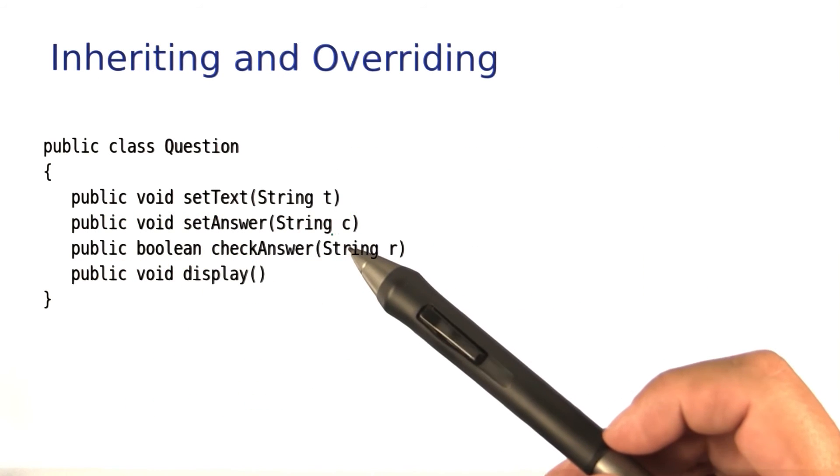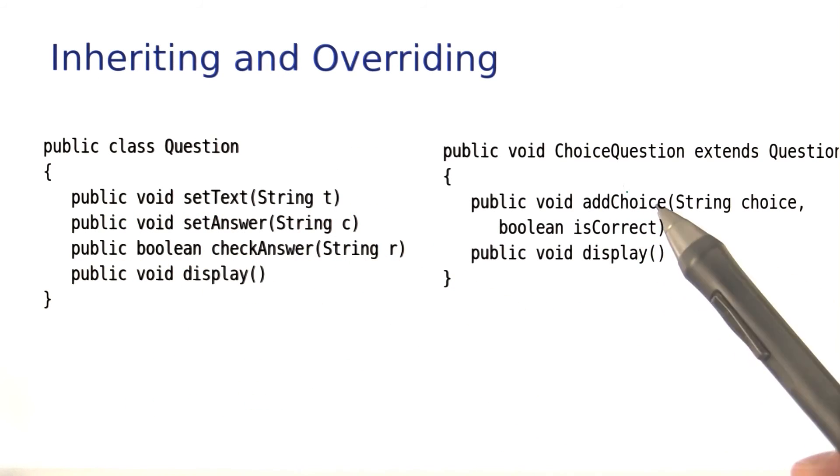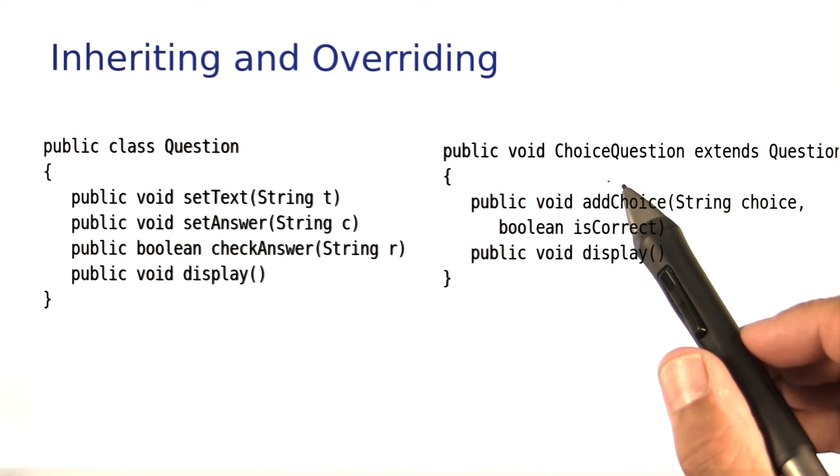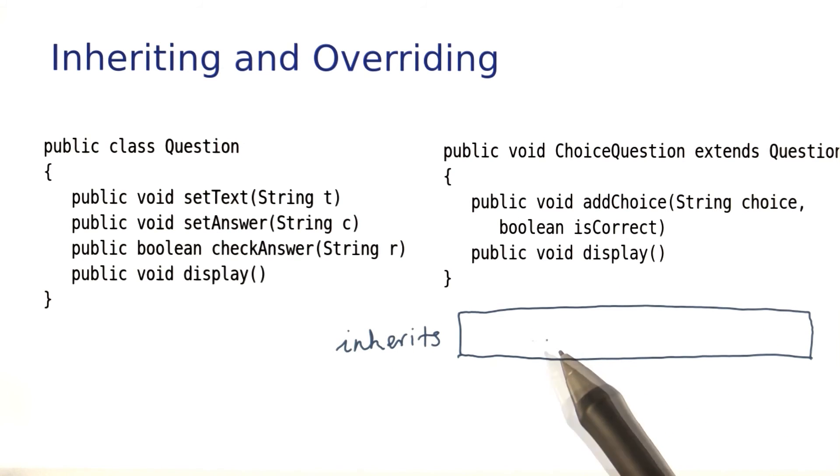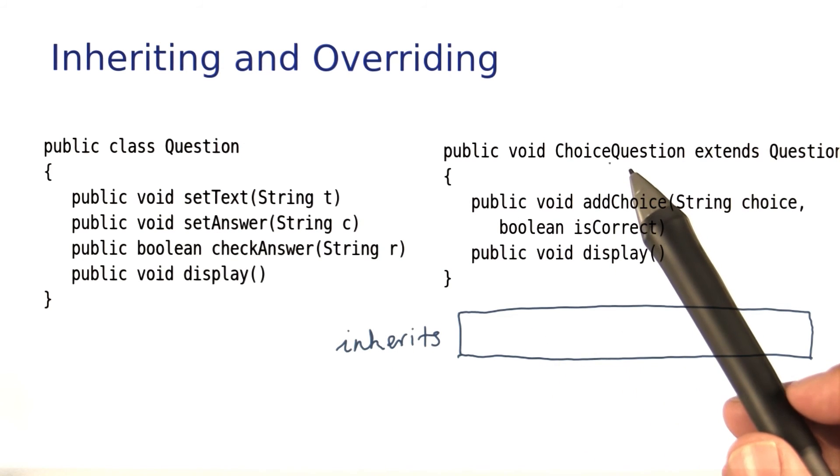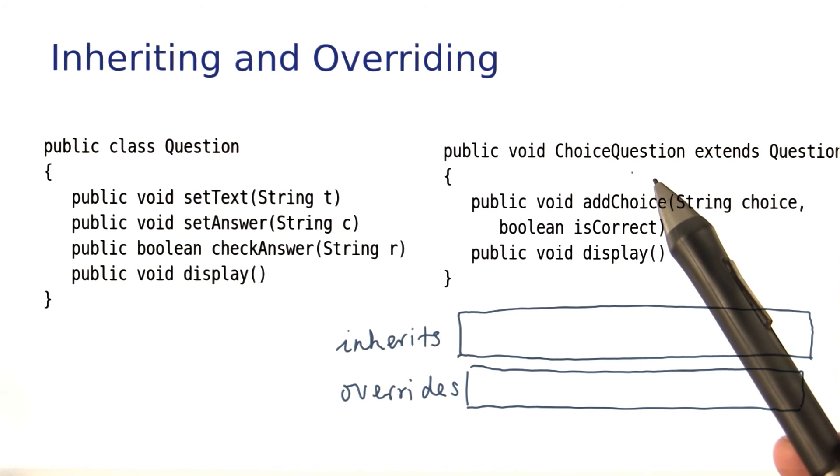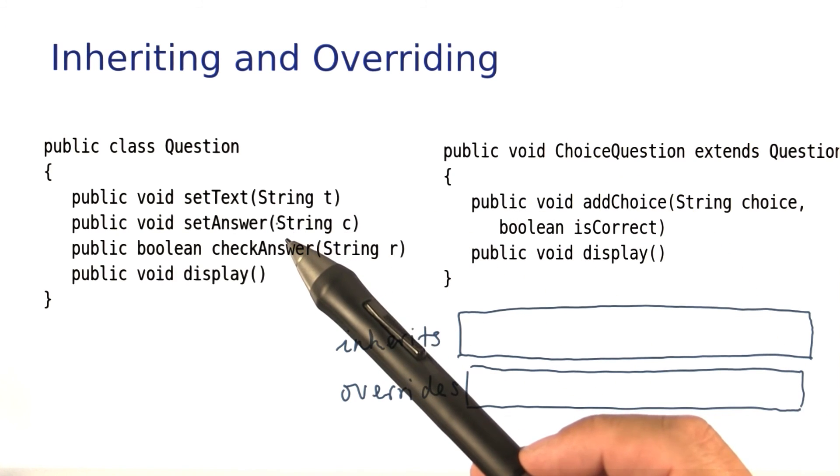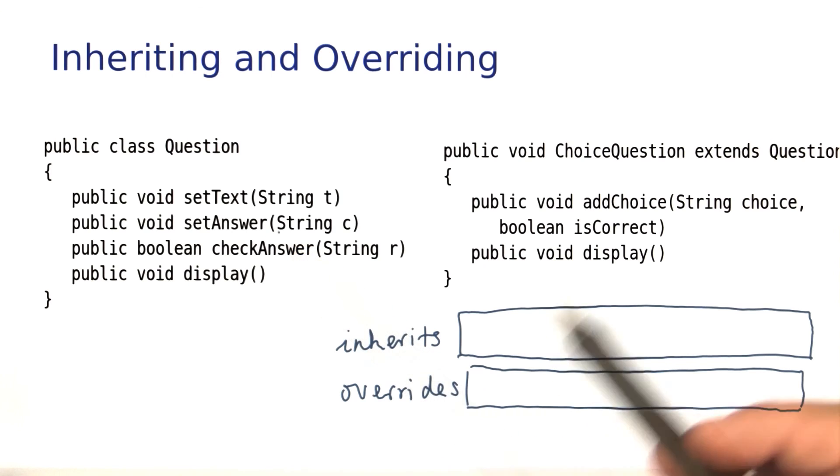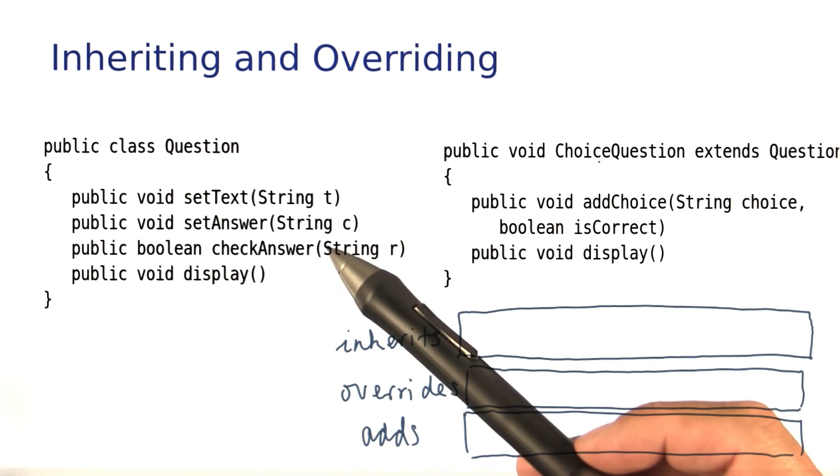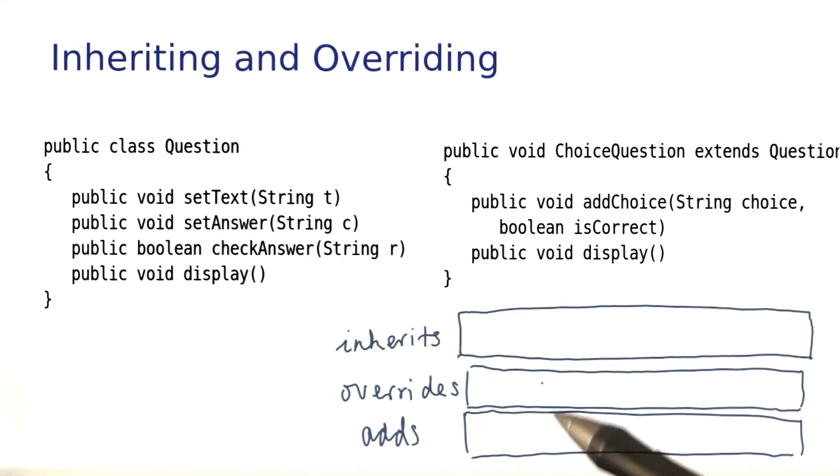Here is our question class. Here is the choice question class. Now have a close look and tell me, which methods does the choice question class inherit? Just give me the names of all those methods that choice question doesn't redefine, that it simply picks up from question. Which methods does choice question override? That is, which methods does choice question need to redefine because the ones from question are not satisfactory? And finally, which method or methods does choice question add that weren't present in the question class in the first place? Just give me the names of the methods. All together, the five of them.